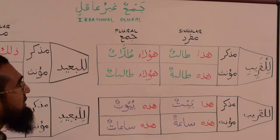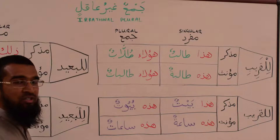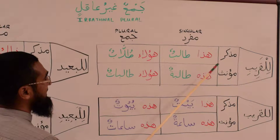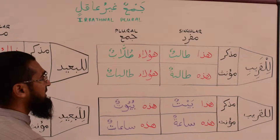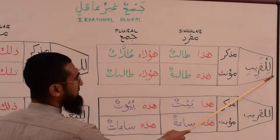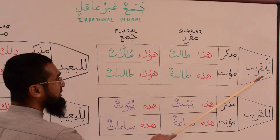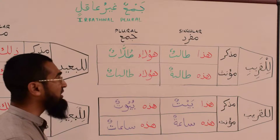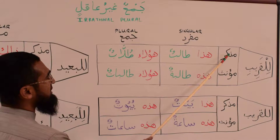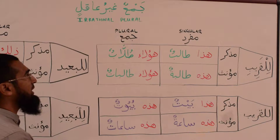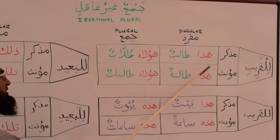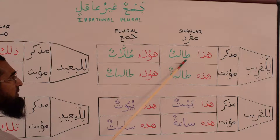We learned the اسماء الاشارة, the demonstrative pronouns, such as هذا، هذه، هؤلاء. We said that للقريب — قريب means close — for something that is close we would say 'this is such and such.' The مذكر is masculine, the مؤنث is feminine, and we have the singular and plural forms. So if we want to use the word طالب as an example, we say هذا طالب — this is a student.